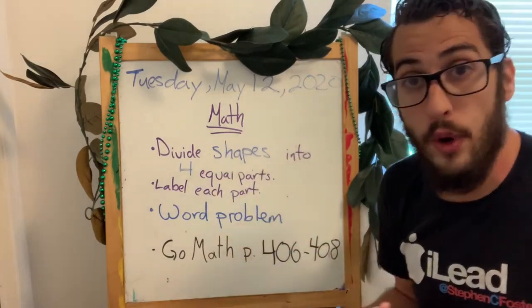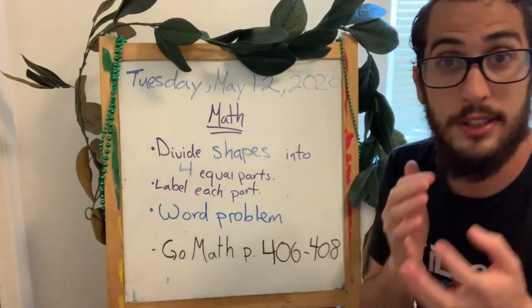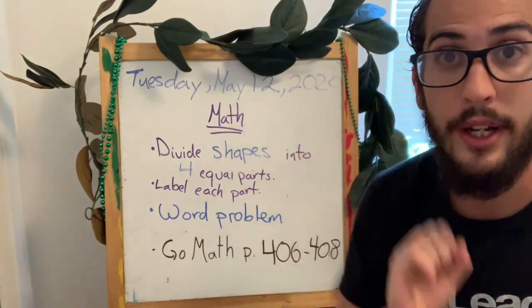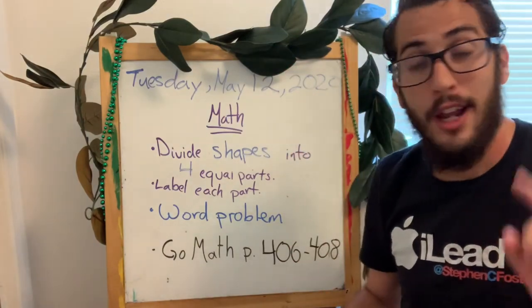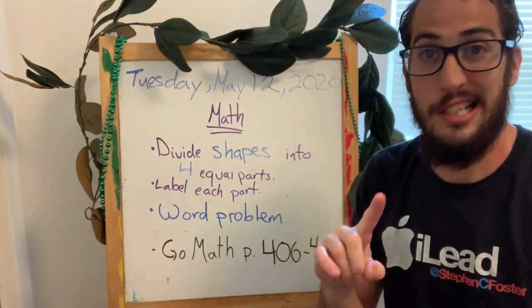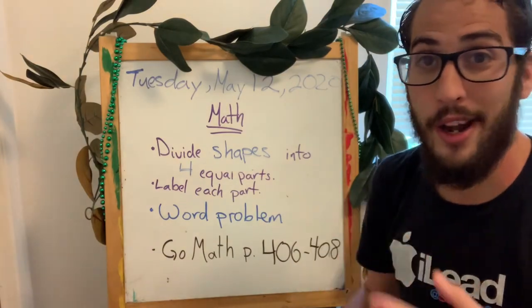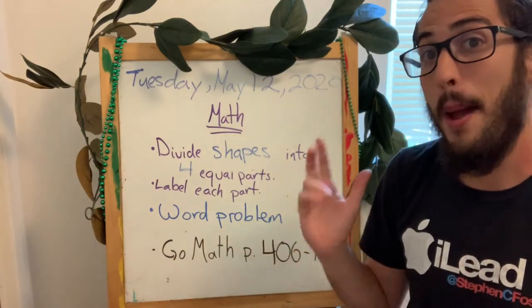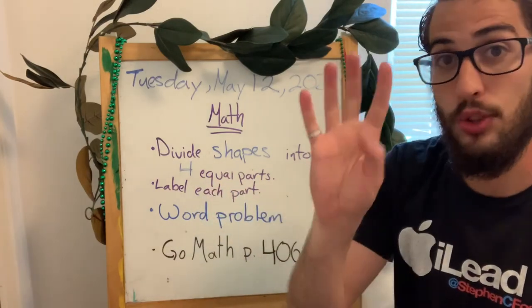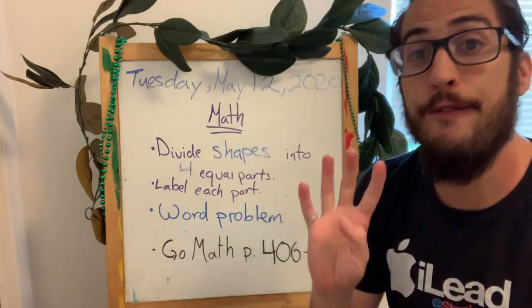Today on math, we are going to divide shapes. Just like yesterday, you had to divide a rectangle into two equal parts. Today, you're not doing a rectangle. You can choose any shape you like—you can do a star, you can do a pentagon, a square, triangle, any shape, but you need to divide it into four equal parts. Remember the name of the four equal parts? It's called fourths.